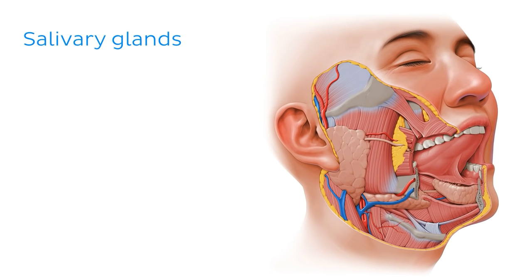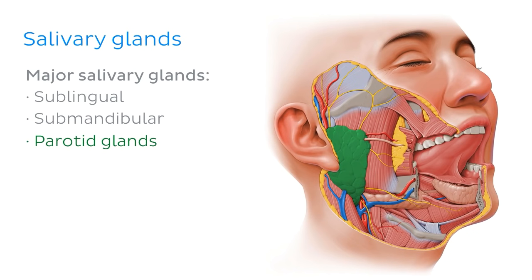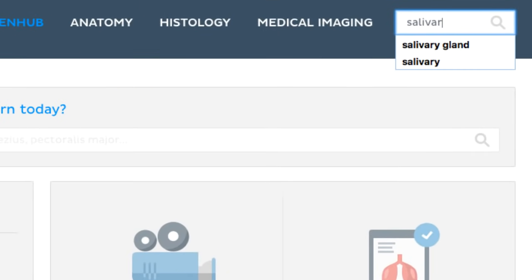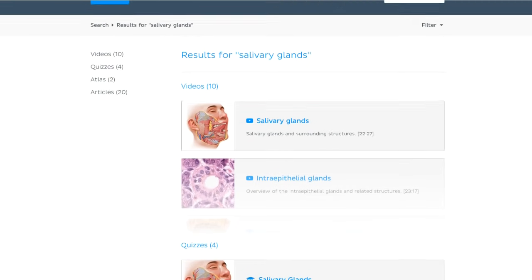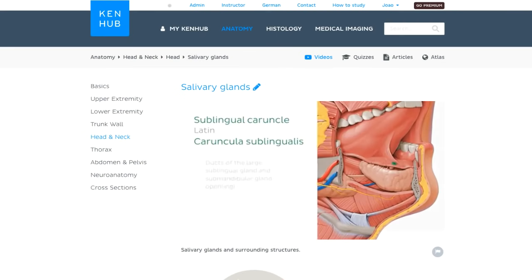The three major salivary glands are the sublingual, the submandibular, and the parotid glands. We're just going to briefly cover these glands here, but if you want a more in-depth discussion, you can head to the main Kenhub website.